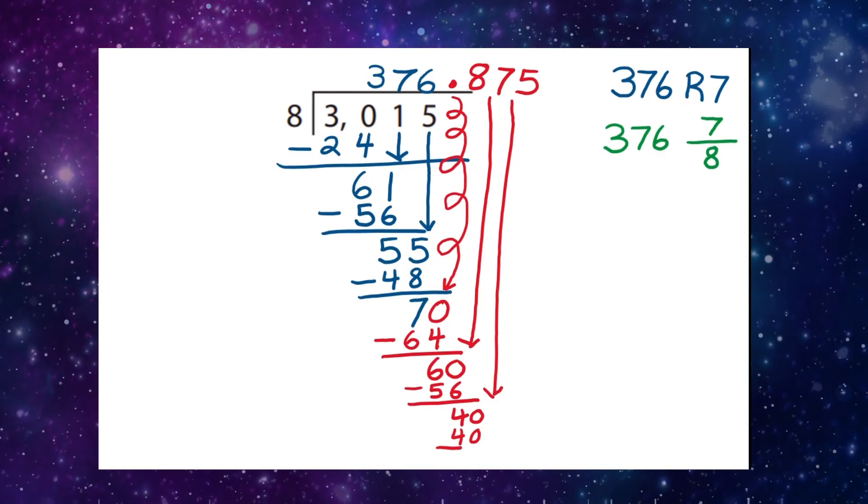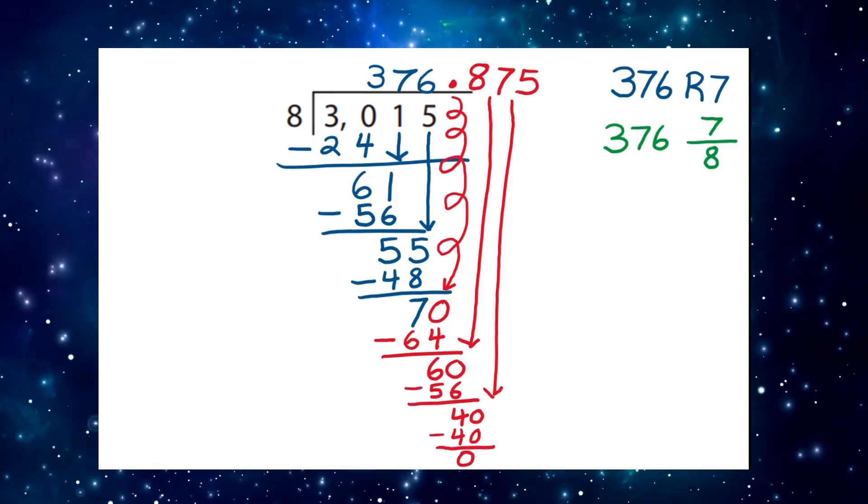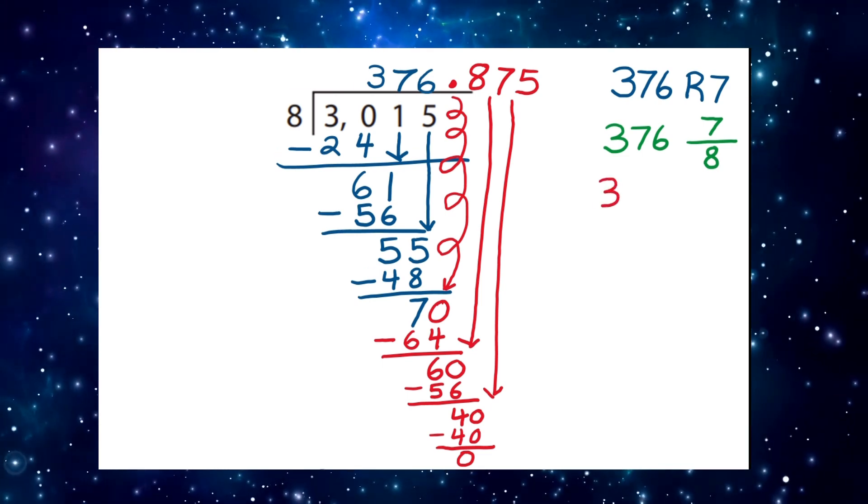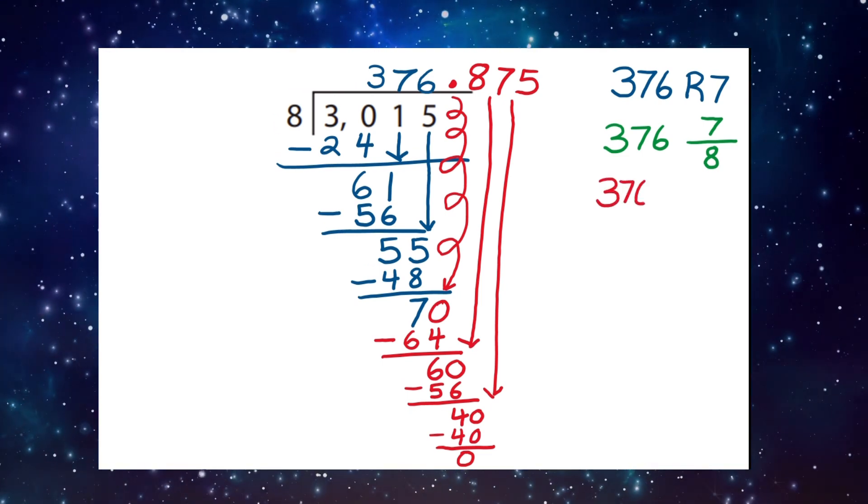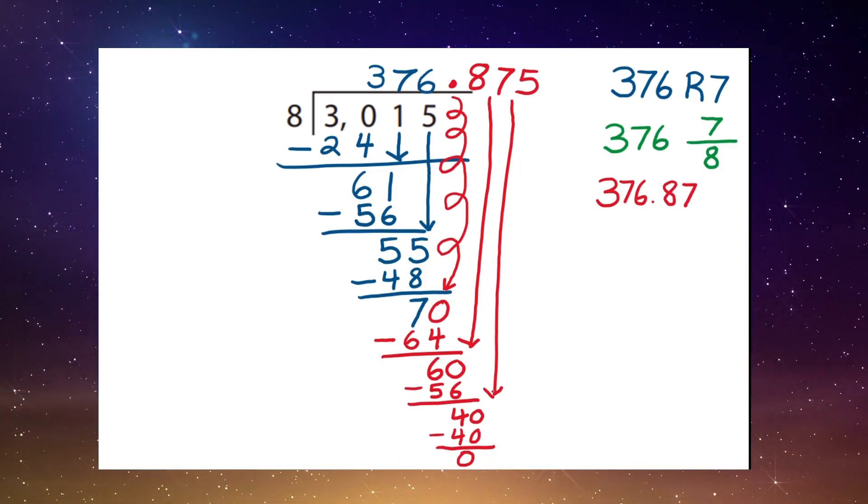And forty decreased by forty is zero. Giving us our final answer of three hundred seventy-six and eight hundred seventy-five thousandths.